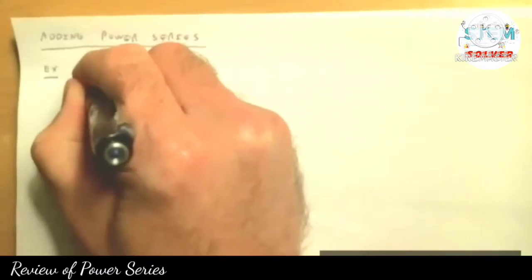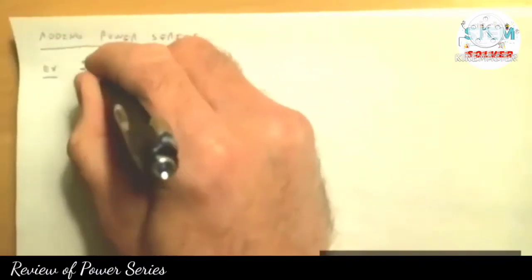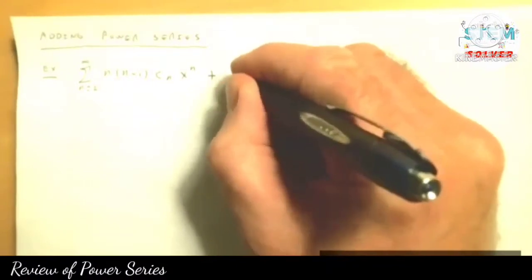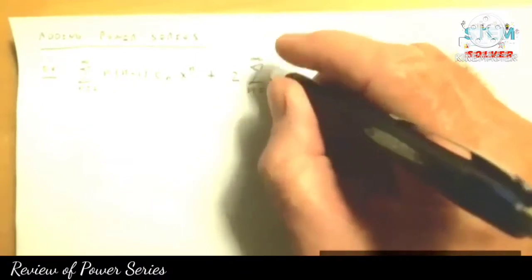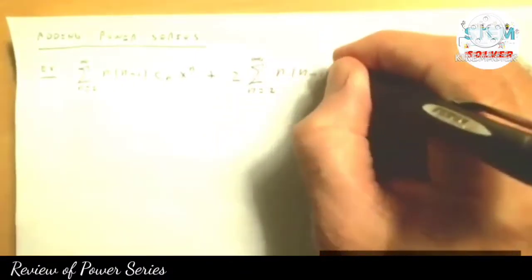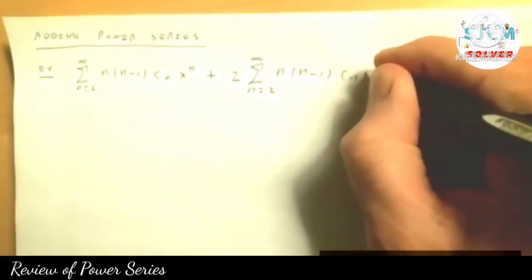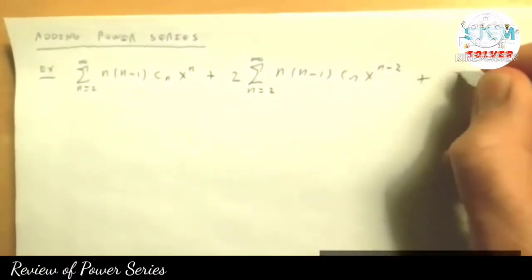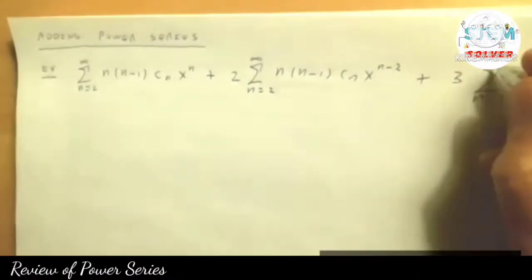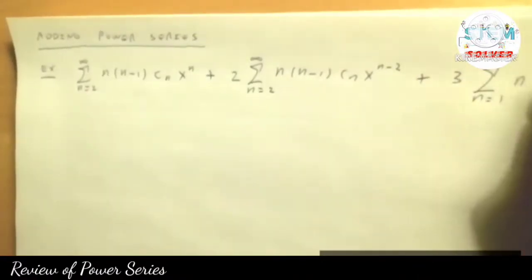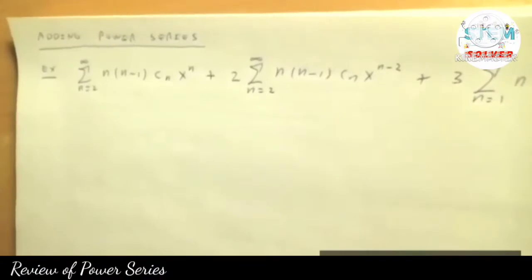You have a space from n equal 2 to infinity, n times n minus 1, cn x to the n, plus 2 times the series from n equal 2 to infinity, n times n minus 1, cn x to the n minus 2, plus 3 times the series from n equal 1 to infinity, n cn x to the n.